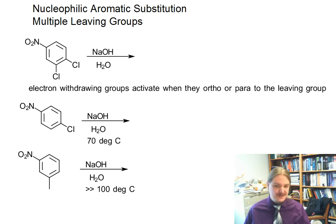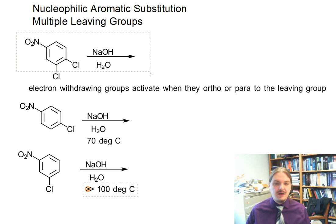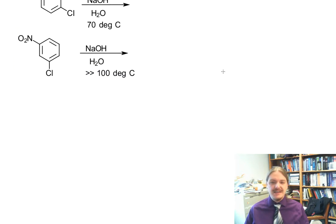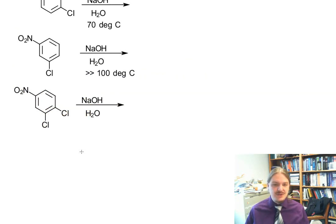We can actually use this information to figure out that our electron withdrawing group is only going to activate substitution at the position para to it. Or if there's a leaving group ortho, it would activate there too.